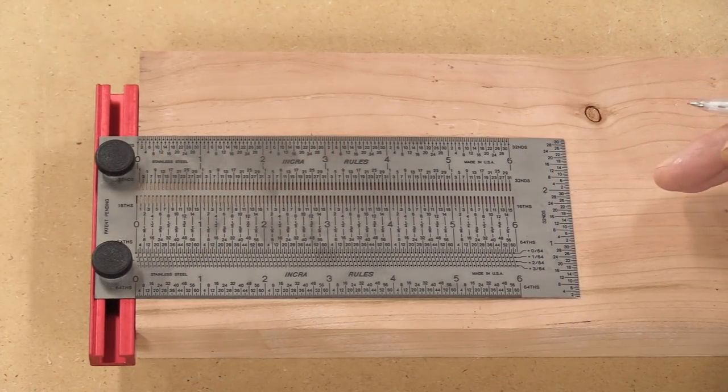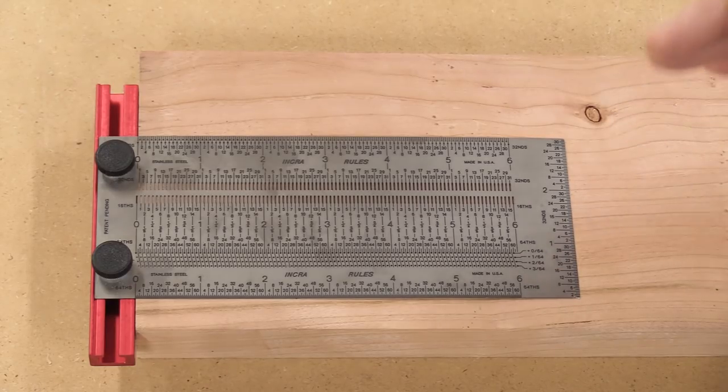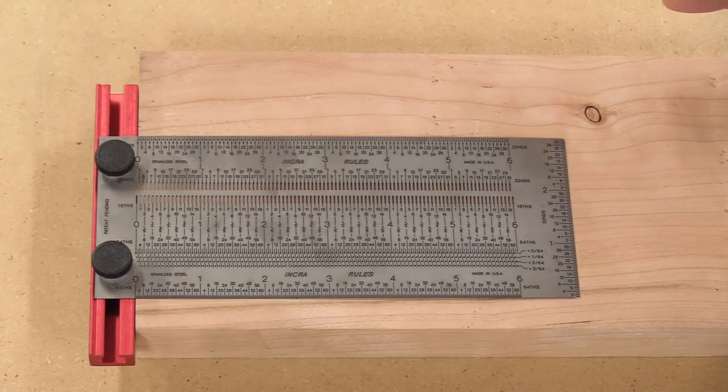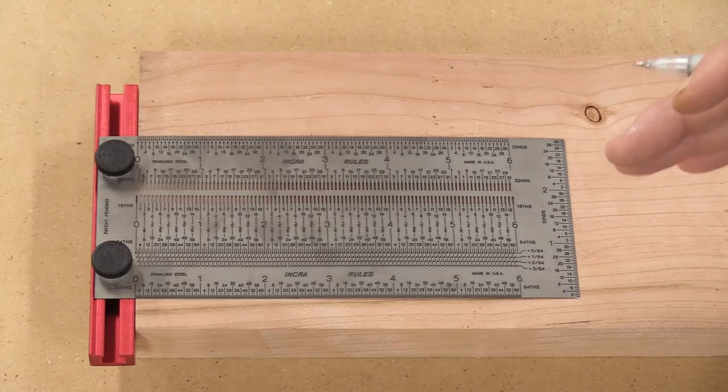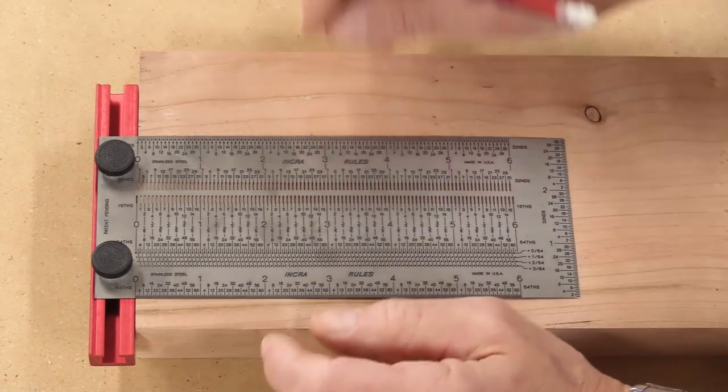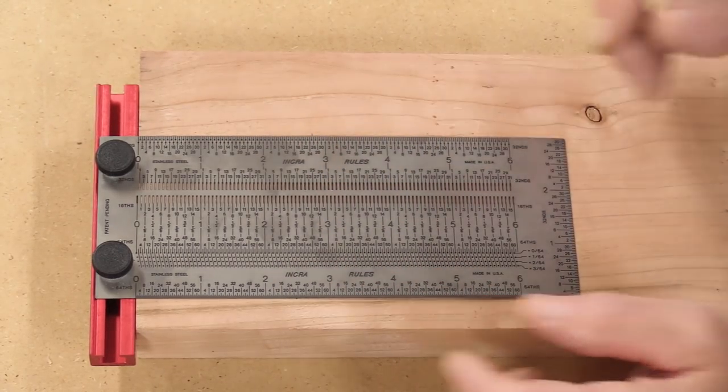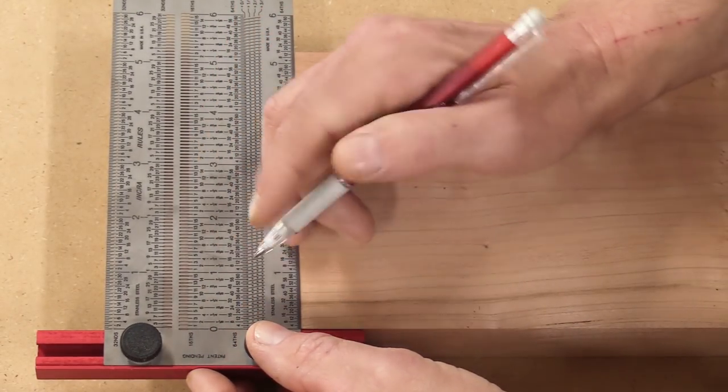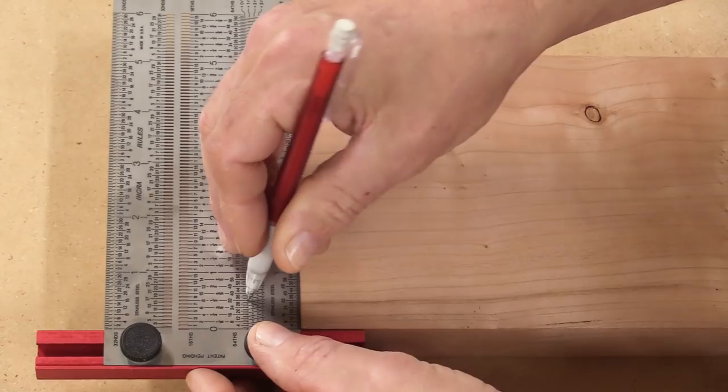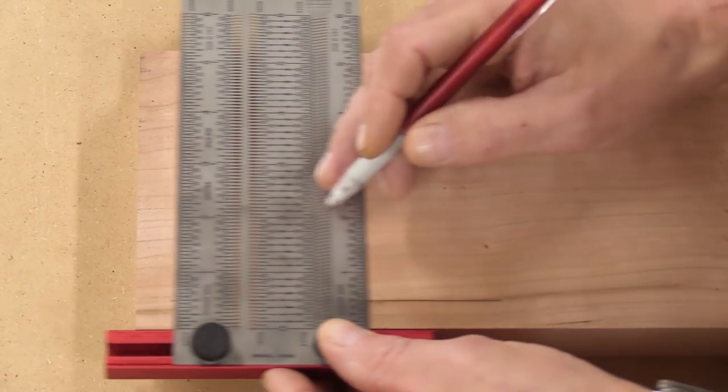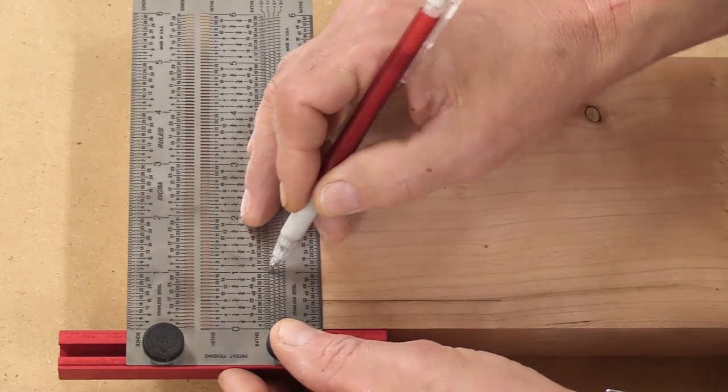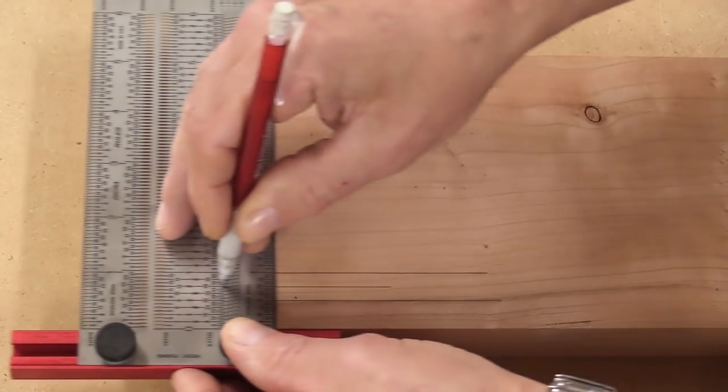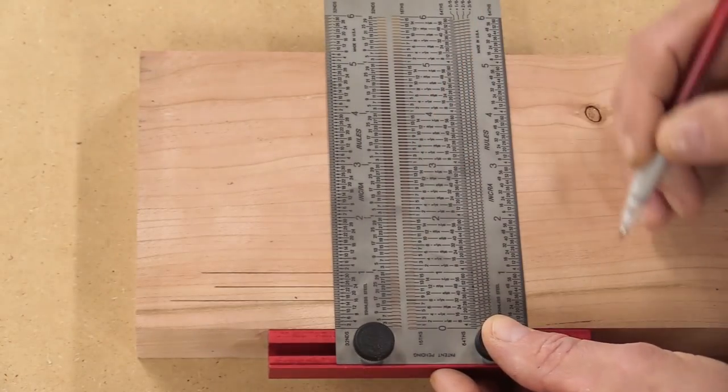One of the nicest things about using this is the efficiency at which you're able to make marks. So let's say you want to make a mark at a half inch, then a one inch, and then another one at three quarters of an inch. You're not taking a combination square and moving it around and trying to get all those different measurements. I just find the slot for a half inch, there you go, and let's say I want to make it one inch, and then I want to make it at three quarters of an inch. Pretty cool.